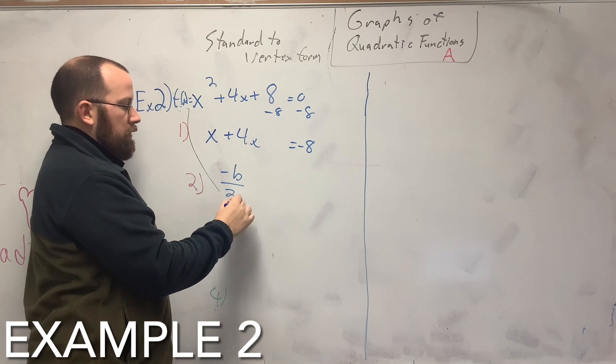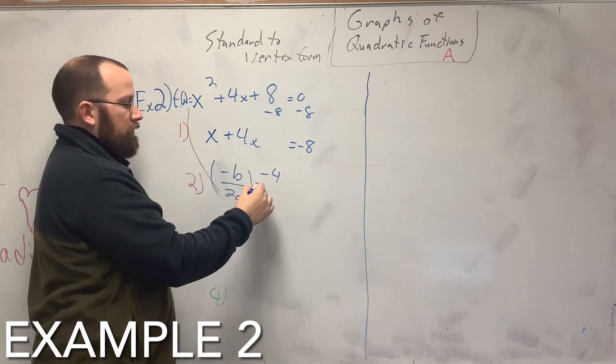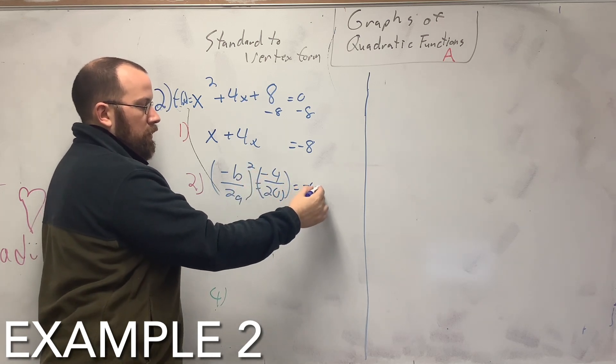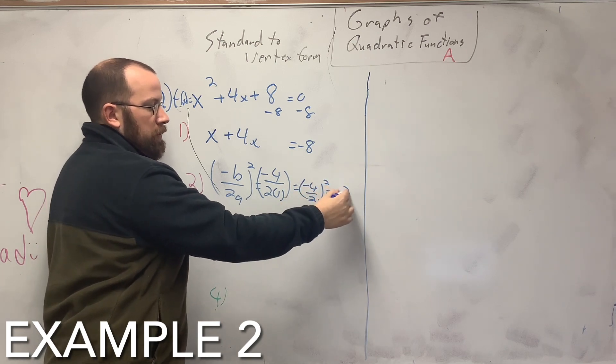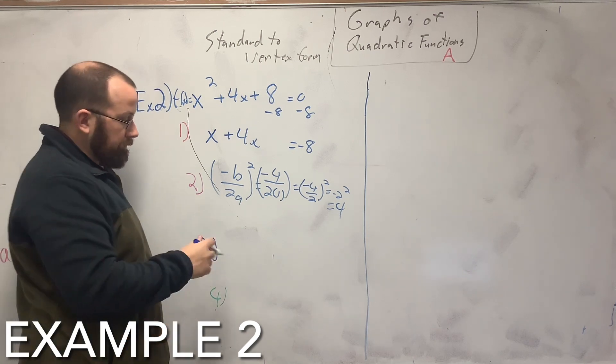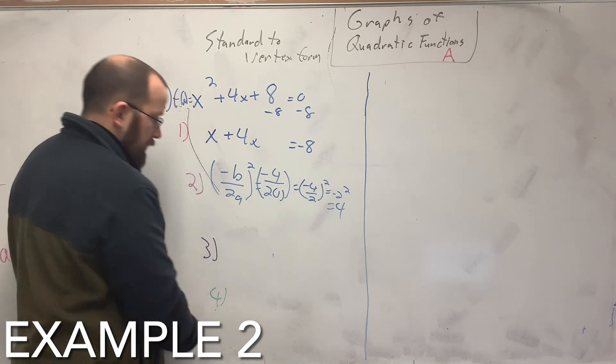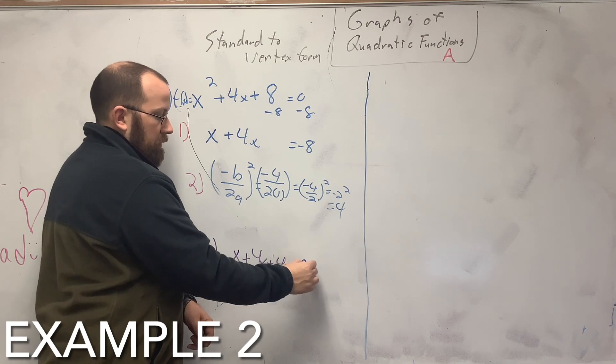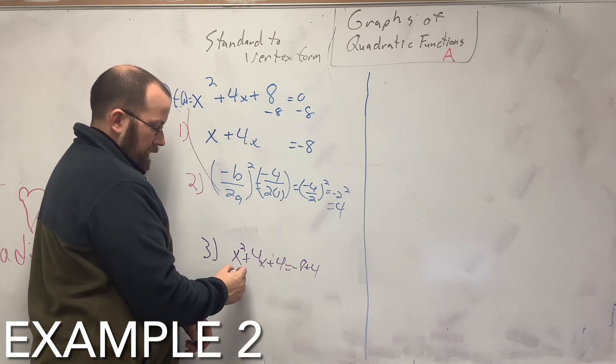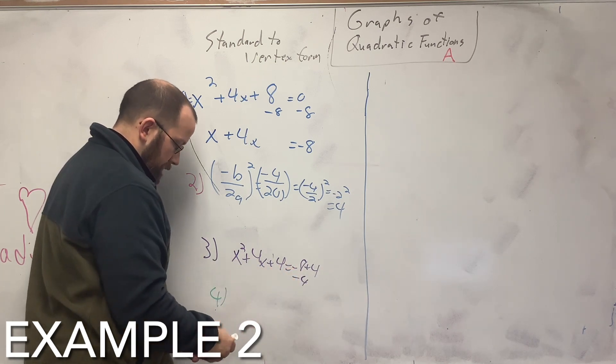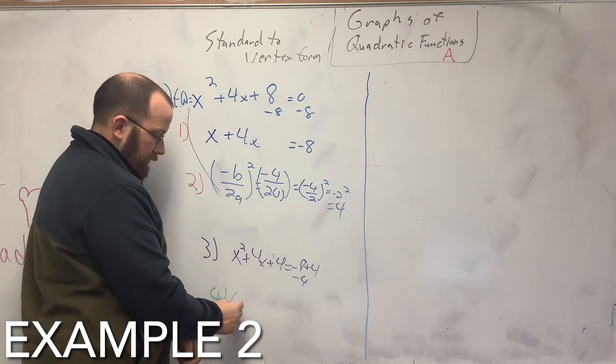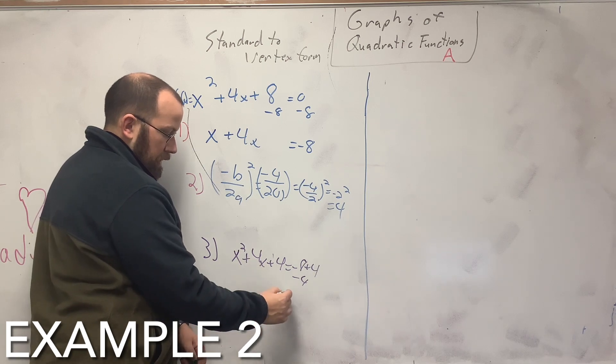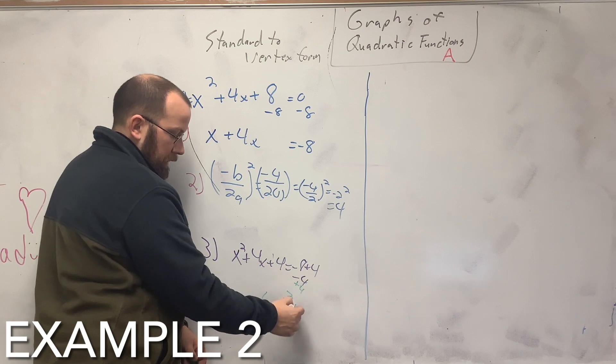Then negative b over 2a. So that makes it negative 4 over 2 times 1 squared, which gives you negative 2, 4 over 2 squared, which is negative 2 squared, which is 4. So then x plus 4x plus 4 equals negative 8 plus 4. So break, combine that to get negative 4 over there. Now our last step is you break this down. So I get f(x) equals x plus 2 squared, then add that over, plus 4.